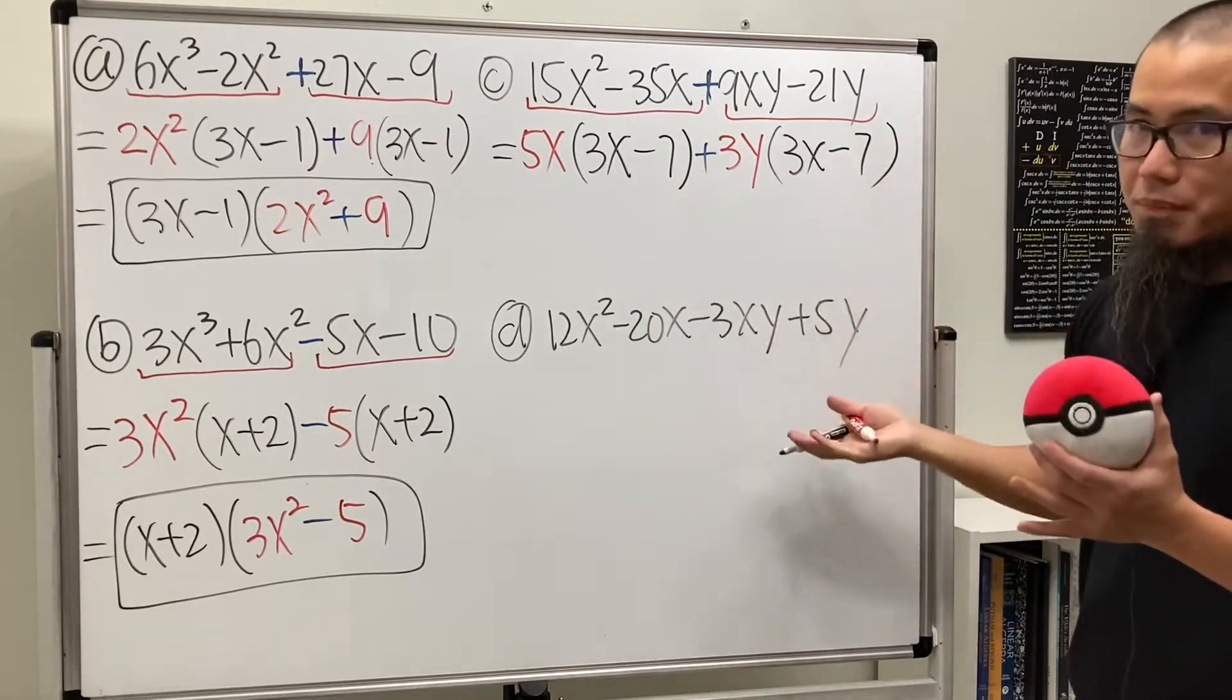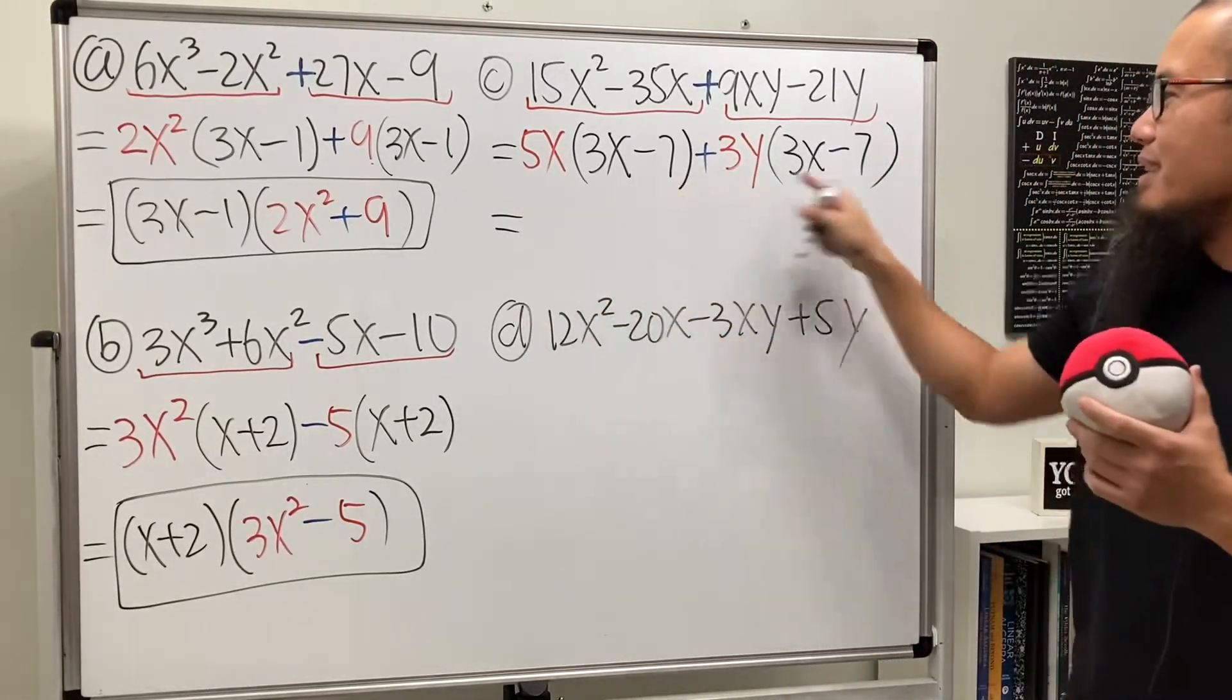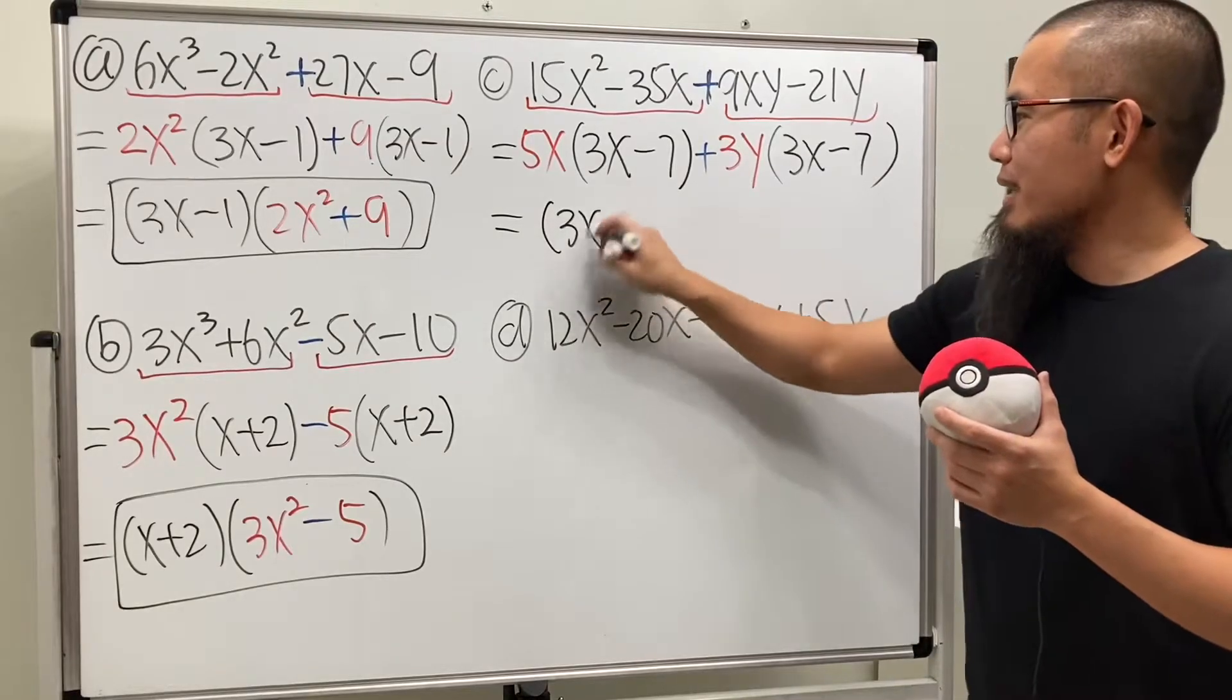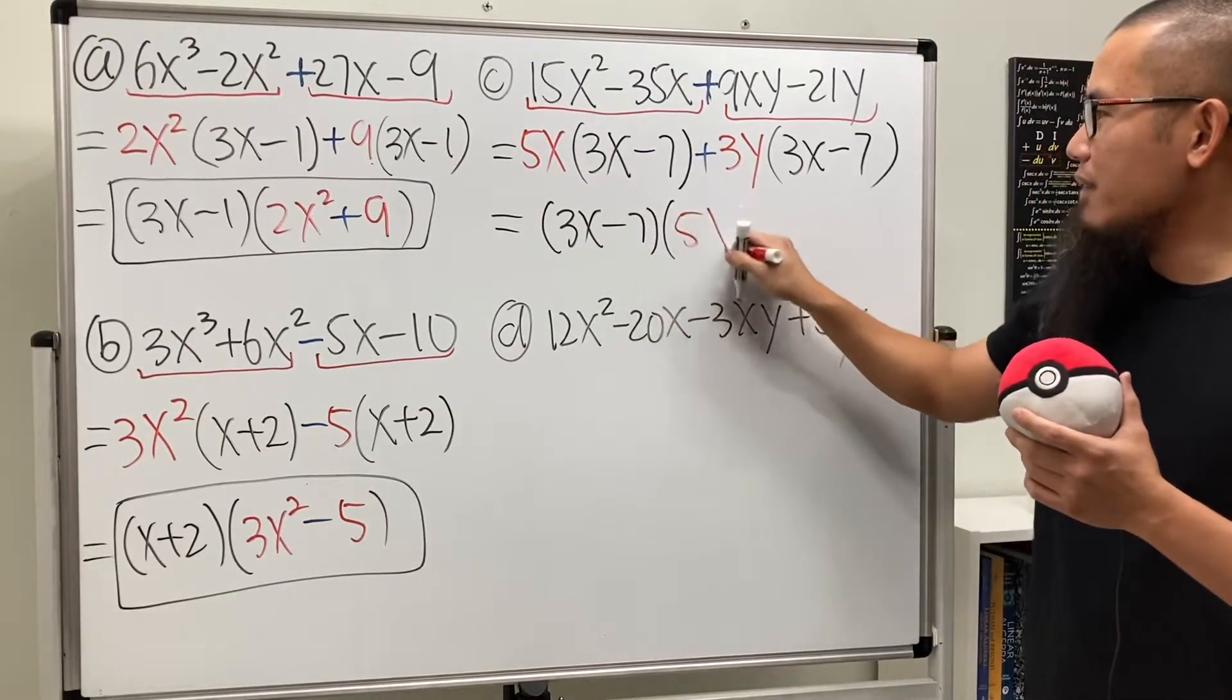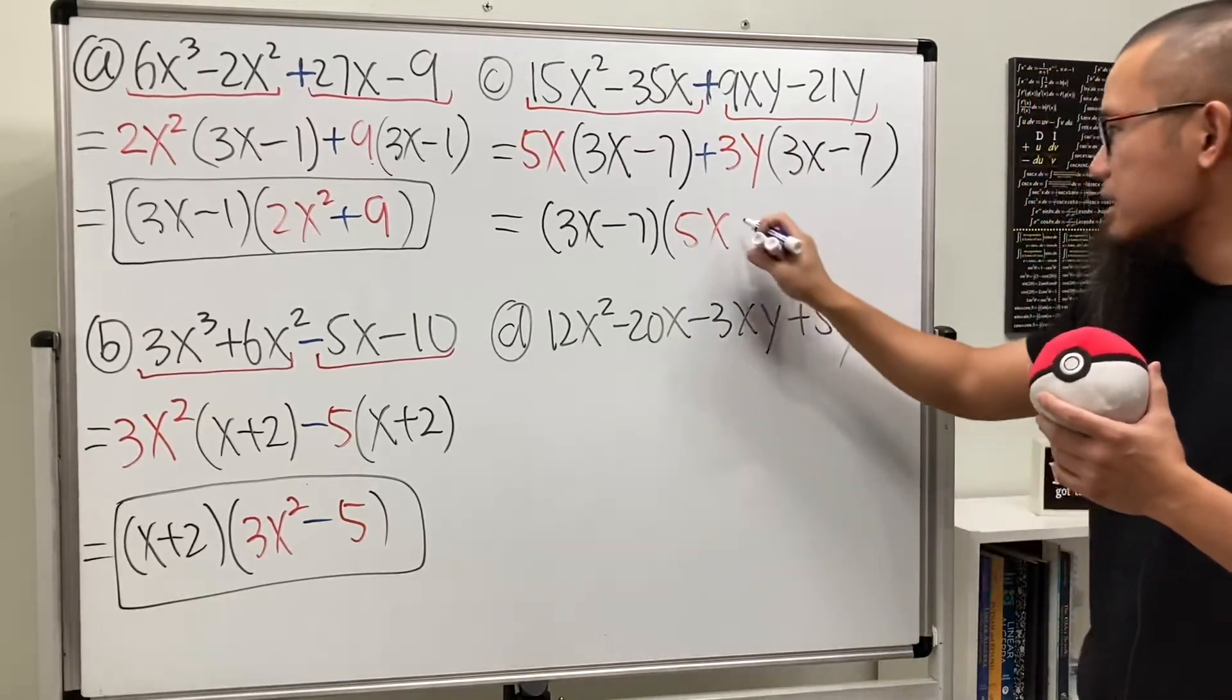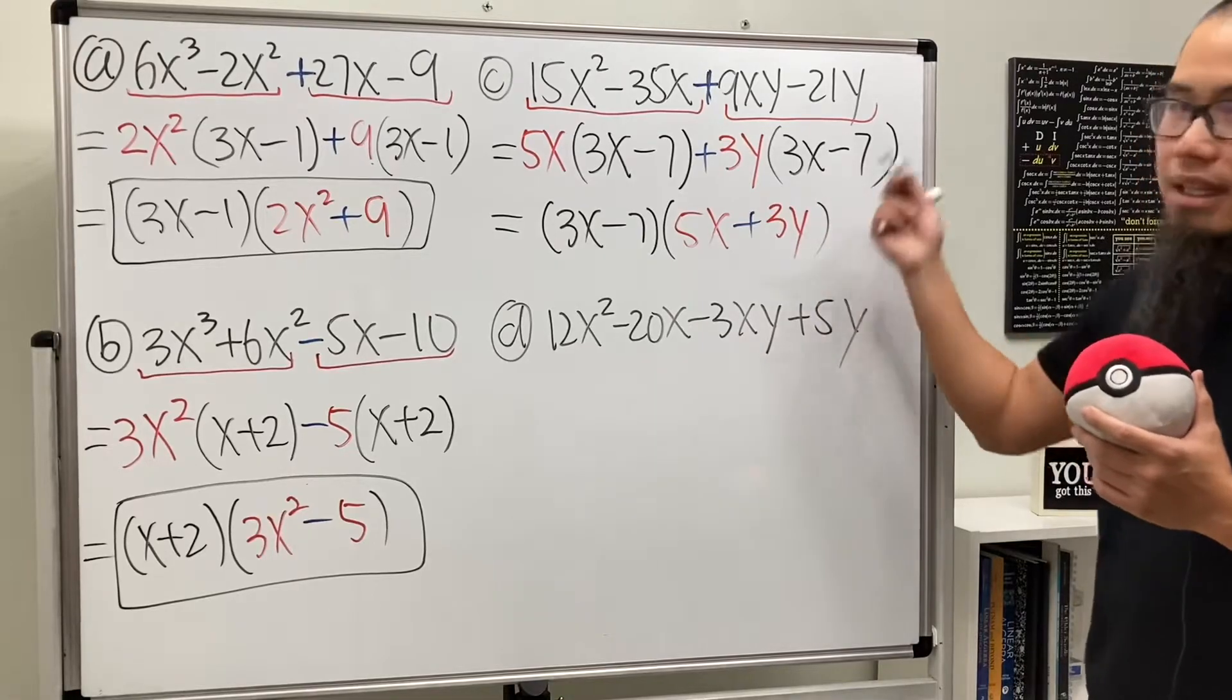Hey, they are the same. Again, because these examples are factorable ones. That's why. Anyway, this and that, put it on the outside. Like this, 3x minus 7. And then times the other one, which is 5x plus 3y. And then we are done for that.